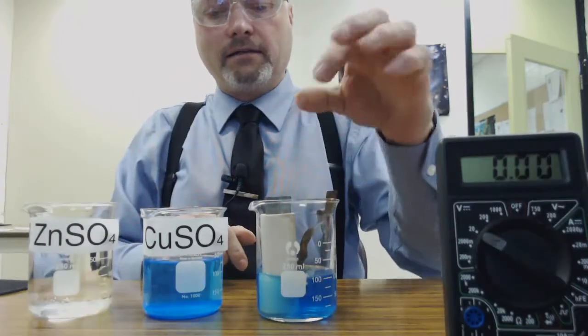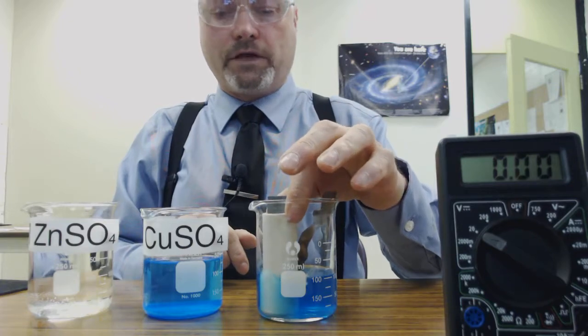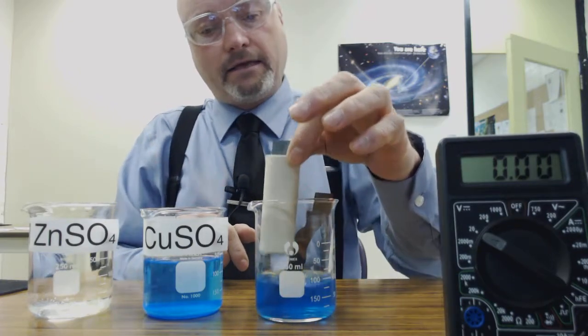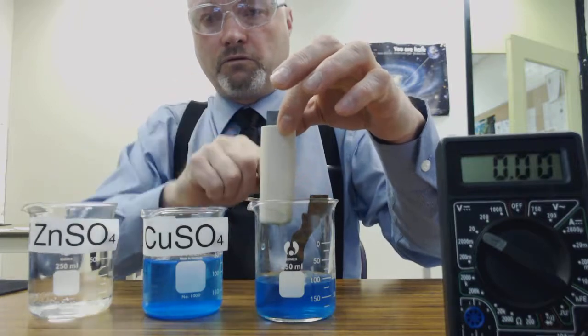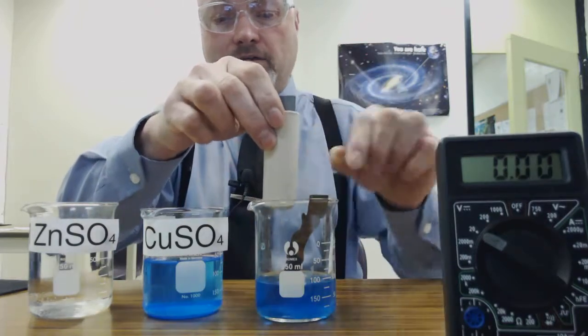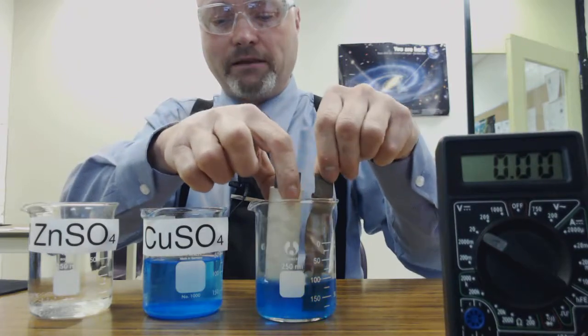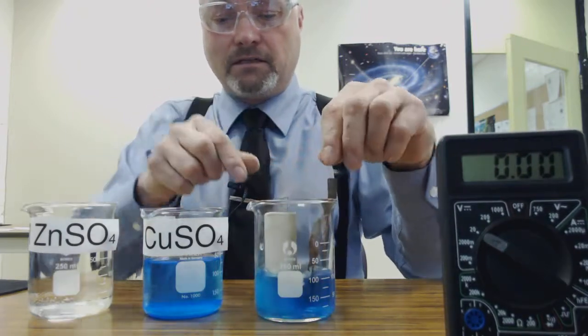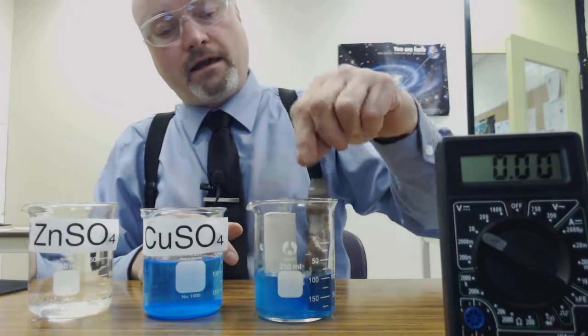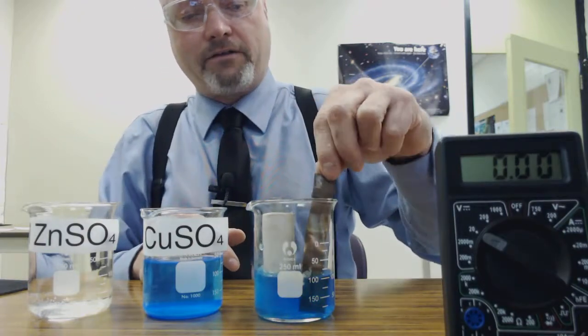This galvanic cell isn't connected by a salt bridge to balance the ions, instead it uses a porous cup. We've soaked this porous cup in sodium chloride so the ions can travel across into each solution to balance the charge as the electrons are passed from the anode to the cathode.